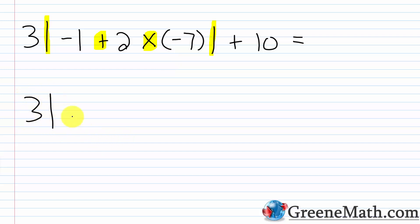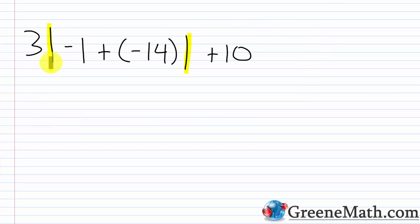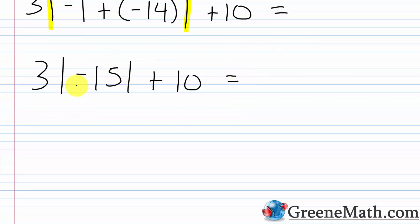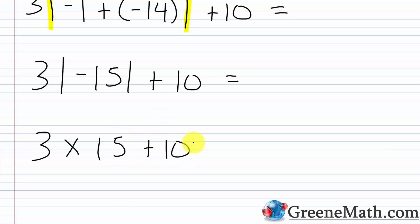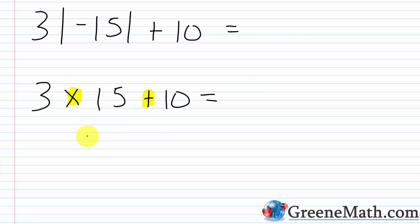Now inside the absolute value bars we have negative one plus negative fourteen. Negative plus negative is negative, one plus fourteen is fifteen — so this is negative fifteen. We have 3 × |(-15)| + 10. The absolute value of negative fifteen is fifteen, so this becomes 3 × 15 + 10. Multiplication before addition: three times fifteen is 45, then 45 plus 10 is 55.